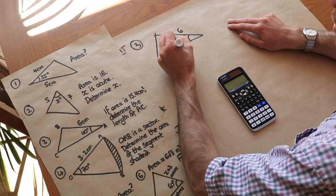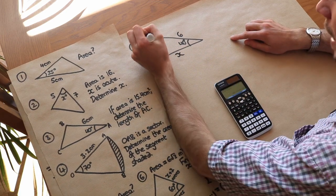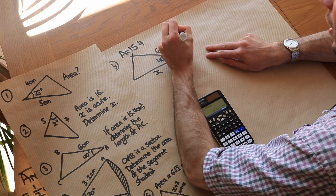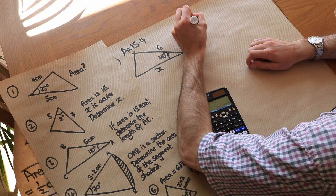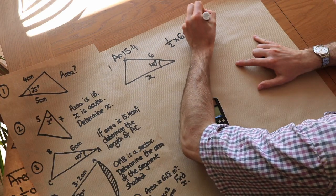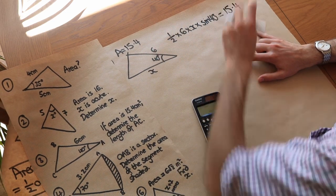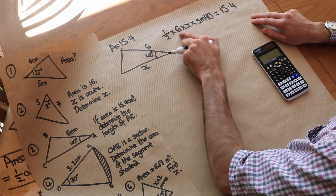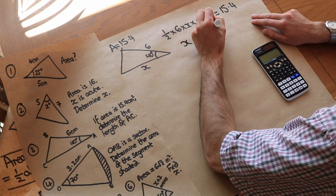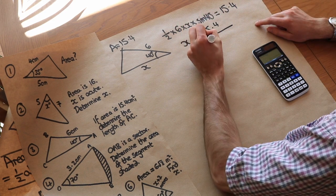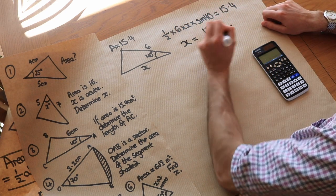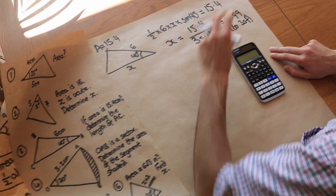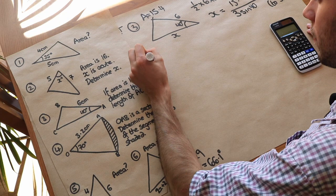For question three, we're told the area is 15.4 and we want to find the length AC — call it x. Using the formula: half times 6 times x times sine 40 equals 15.4. Solving for x: divide both sides by half times 6 times sine 40, which simplifies to 3 sine 40, giving x equals 7.99 to three significant figures.